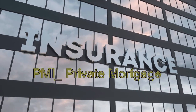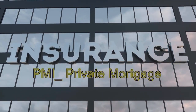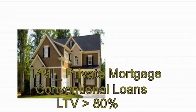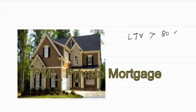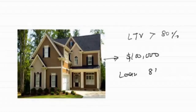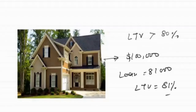The next one is Private Mortgage Insurance, or PMI. This type of insurance is typically required for conventional loans where the down payment is less than 20% — meaning any conventional loan where the LTV is greater than 80%. Let me give you a scenario to explain it in simple terms. If the value of this property is $100,000 and the loan amount is $81,000, that means your LTV is 81%. In that case, we have to go for mortgage insurance.